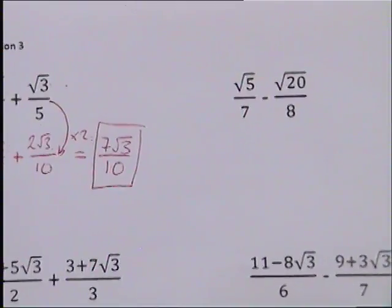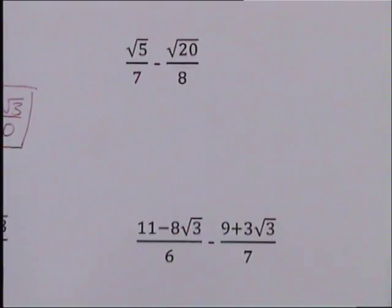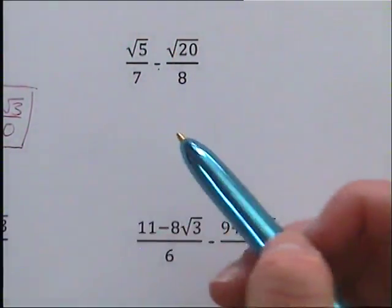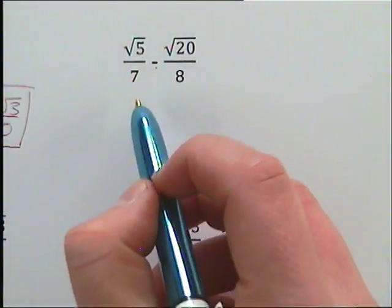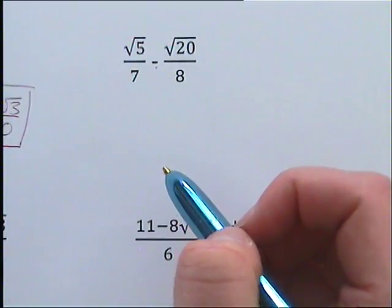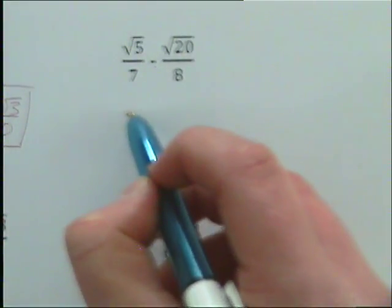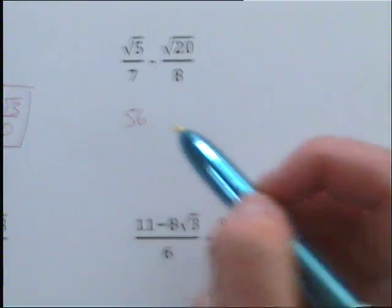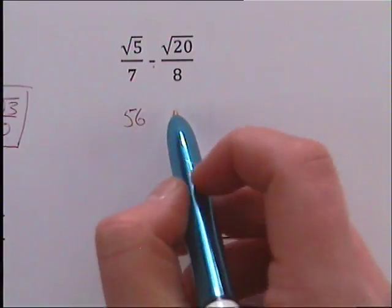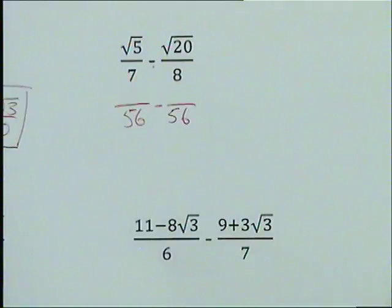Second question. We're going to treat it exactly the same — treat it as our fraction. We're taking one fraction away from another. First step again: make our bottom numbers the same. So the first thing we're going to do is times our denominators together. 7 times 8 is 56, so we're going to have 56 on the bottom, and 56 on this one as well, with our little minus sign in there.